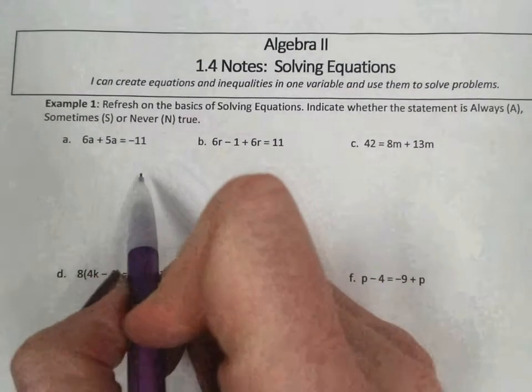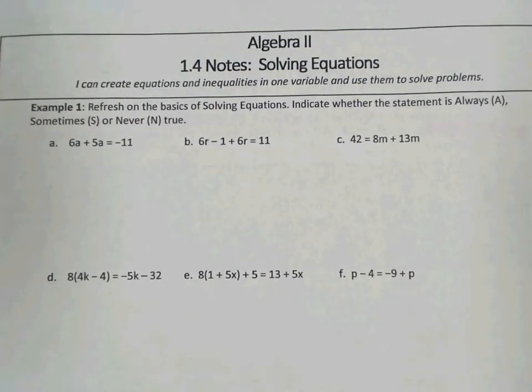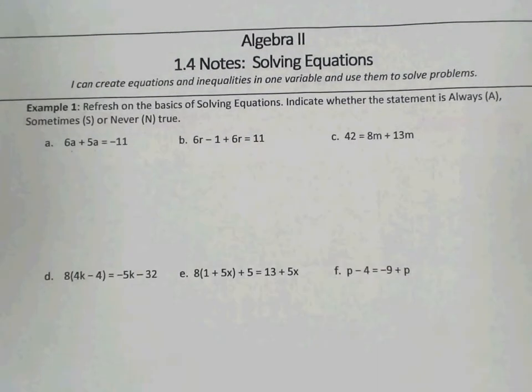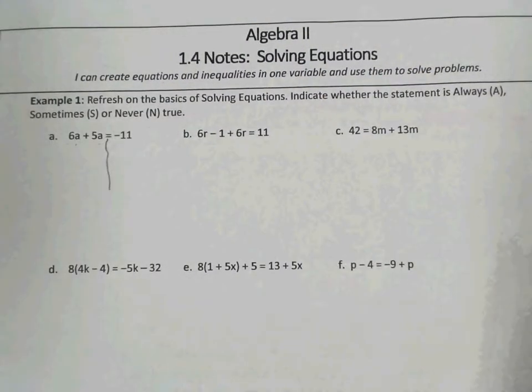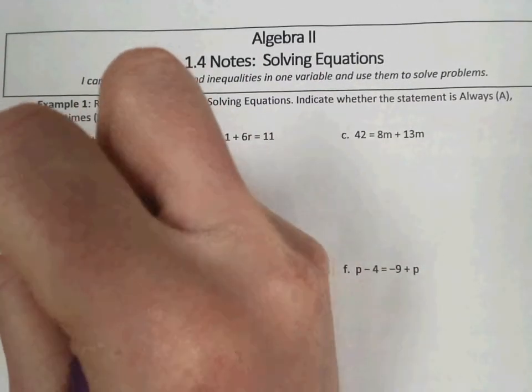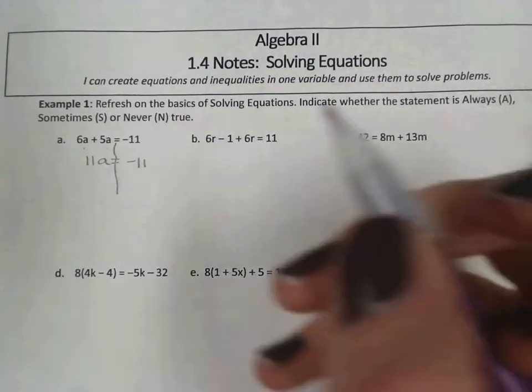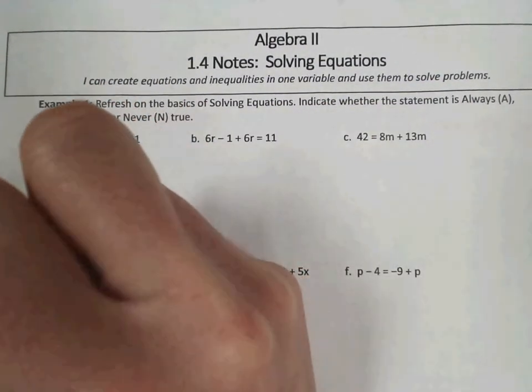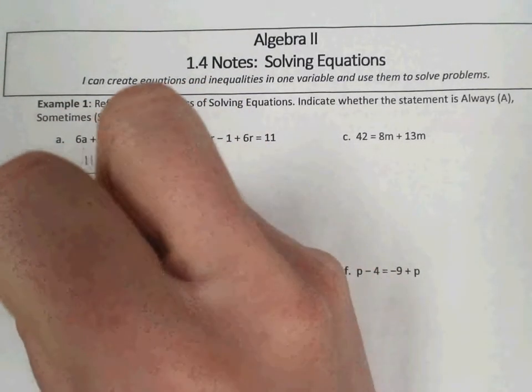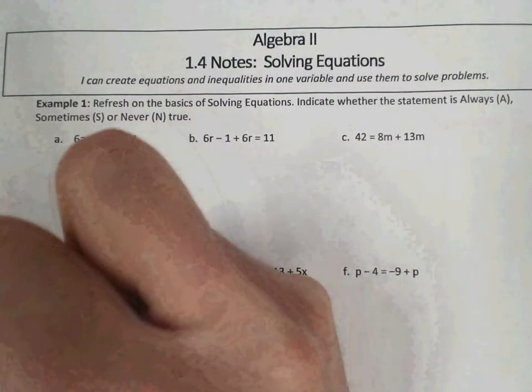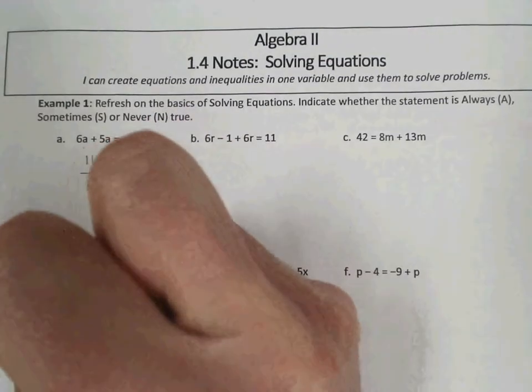Let's start with example a. In solving equations, the first thing you want to do is look to collect all the variables on one side, which they are, and then combine like terms. We combine our, I like to draw a little squiggle line down the middle. 6a and 5a is 11a. So 11a equals negative 11, and then to solve for a, we want to isolate the variable by doing inverse operations. The inverse of multiplication is division. So we're dividing both sides by 11. So a equals negative 1.